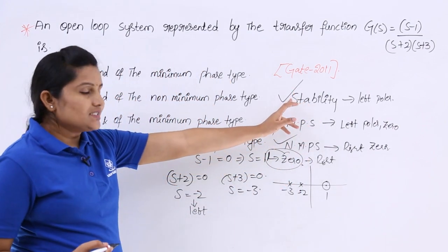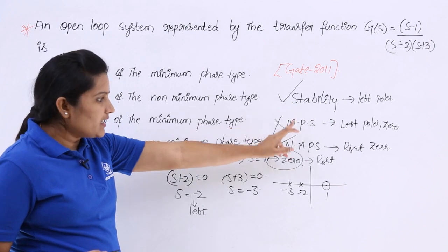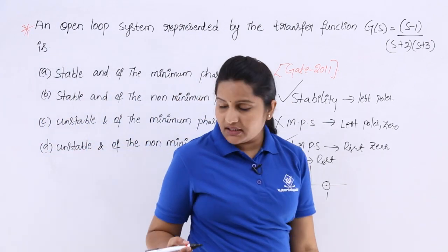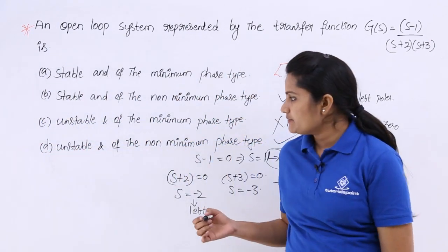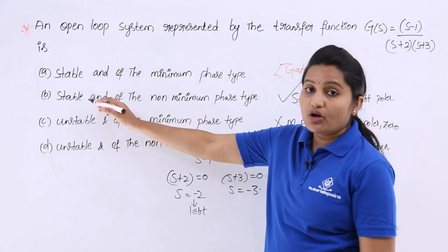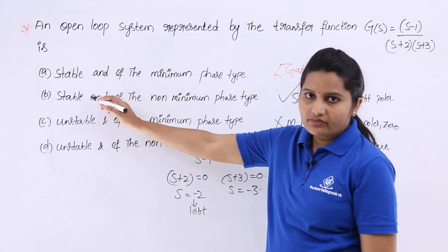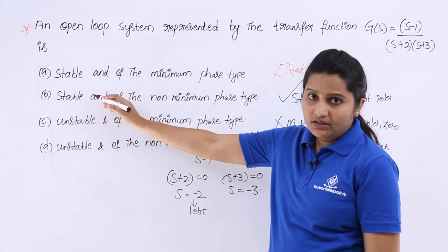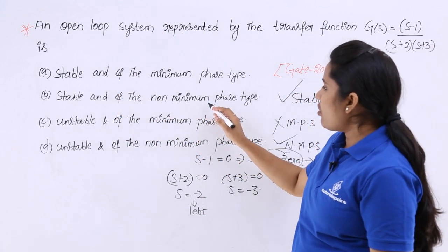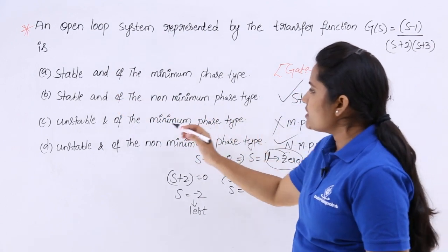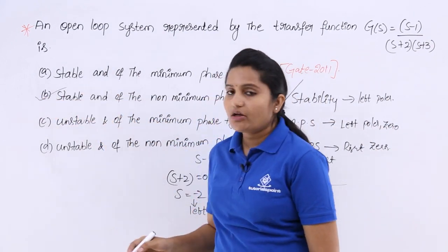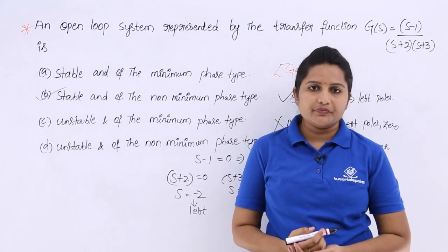So, the system is stable and non-minimum phase. You can see the options — the system is stable, so those two options are in view. Since it is non-minimum phase, option B will be the right answer for this problem.